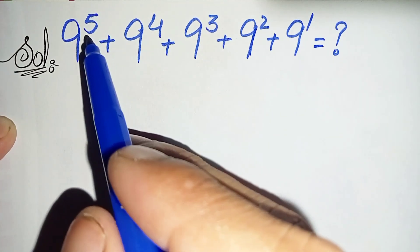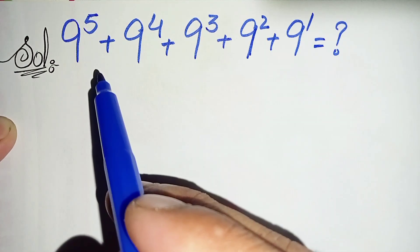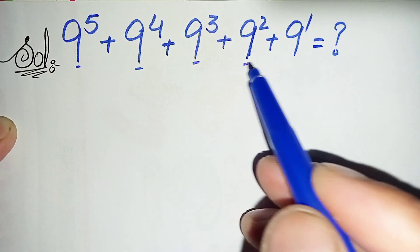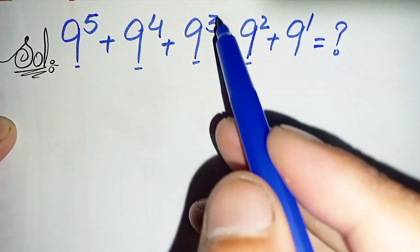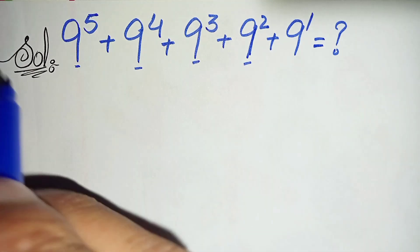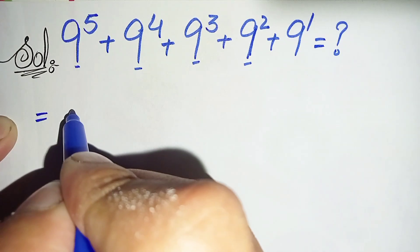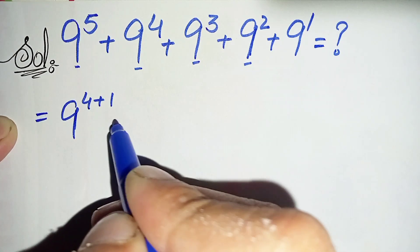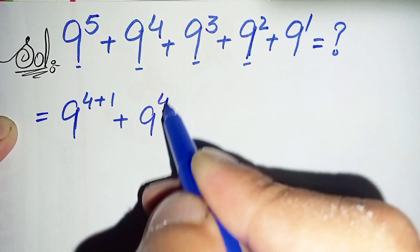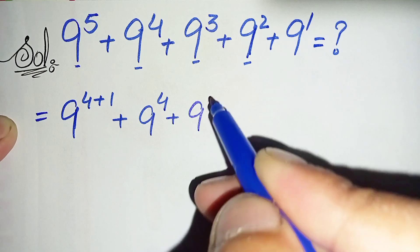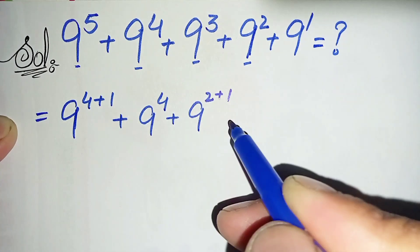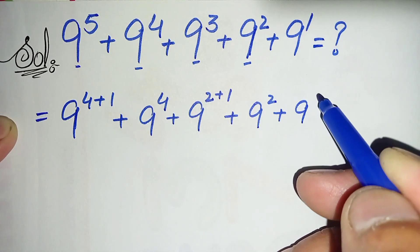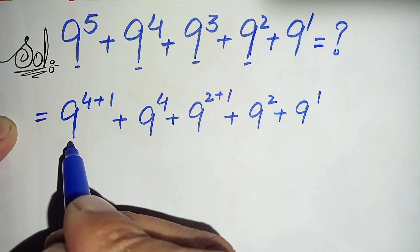What we will do here is try to make the power of these two numbers the same, and also the power of these other two numbers the same. So we will spread the powers. We can write 9 to the power 5 as 9 to the power (4+1), and 9 to the power 4 remains the same. Then 9 to the power 3 can be written as 9 to the power (2+1), plus 9 to the power 2, plus 9 to the power 1.